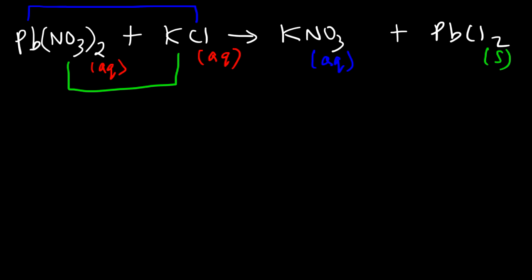Now our next step is to balance the formula equation that we have here. So notice that we have two nitrate ions on the left side. So therefore we need to put a 2 in front of KNO3. But now we have two potassium atoms on the right side so we got to put a 2 in front of KCl. And we can put a 1 in front of the other ones. So now we have a balanced formula equation.